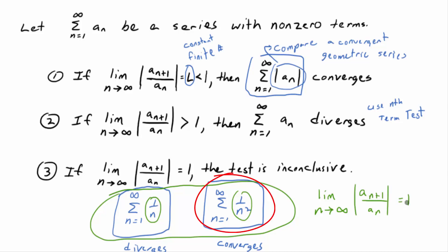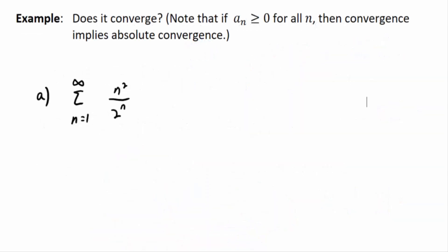this limit of this ratio will equal 1. Yet, the first one diverges, the second one converges. So, you get no information, in other words. So, number three, if you get that limit equals 1, it tells us nothing.